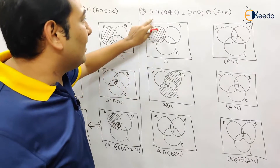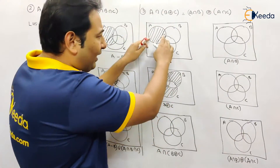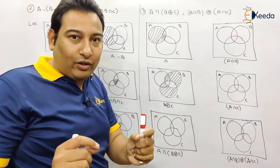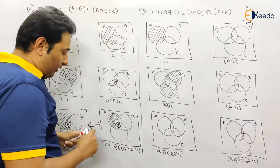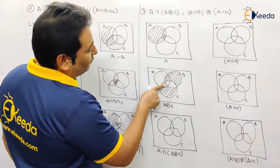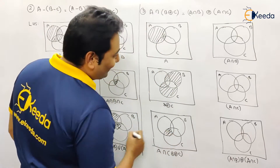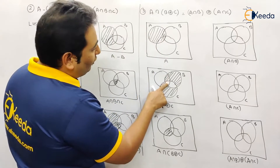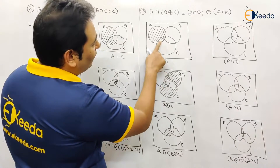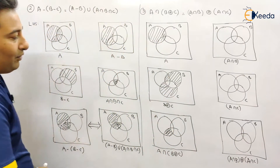Once you are ready with both the regions, now I am going to take their intersection. Don't bother about the question — we are ready with both shades. We just need to take their intersection, meaning whatever is common we are going to consider. So what is common between these two? This part is common, so this part will come into the solution. Is anything else common? Only this part is common — nothing else. So only this part will be shaded.